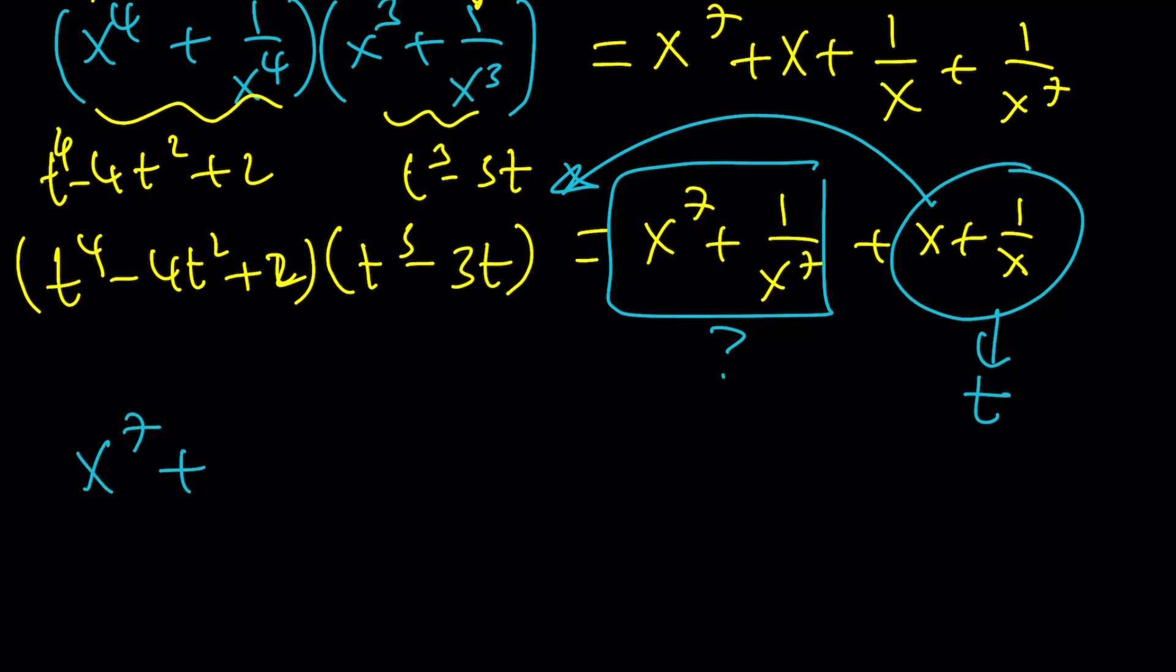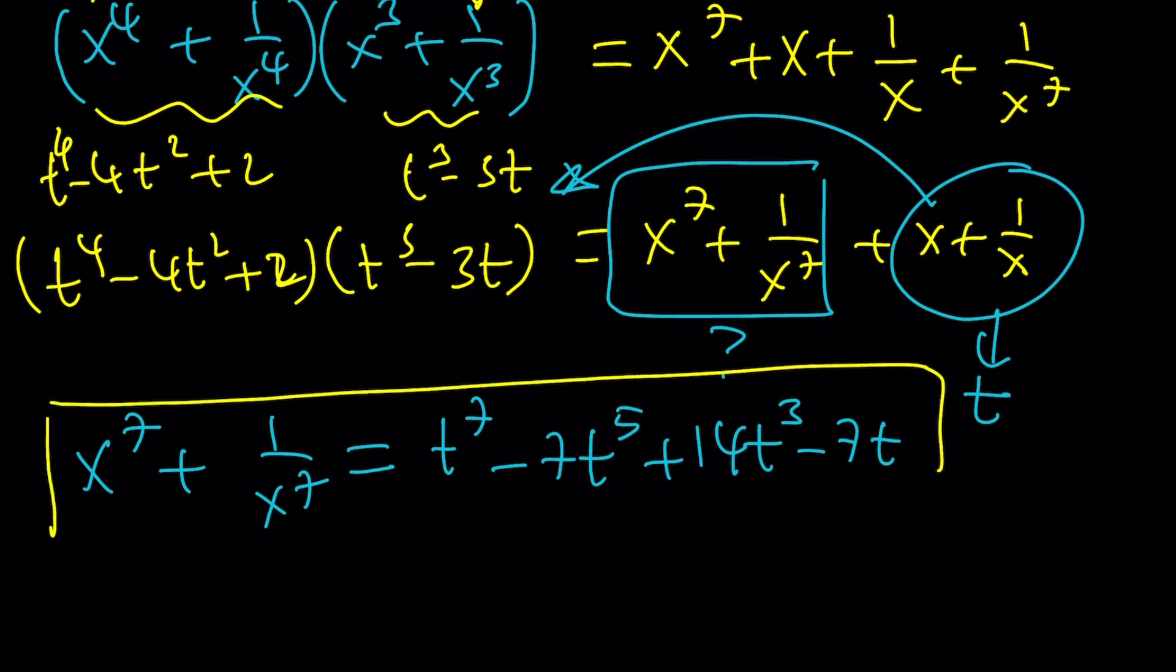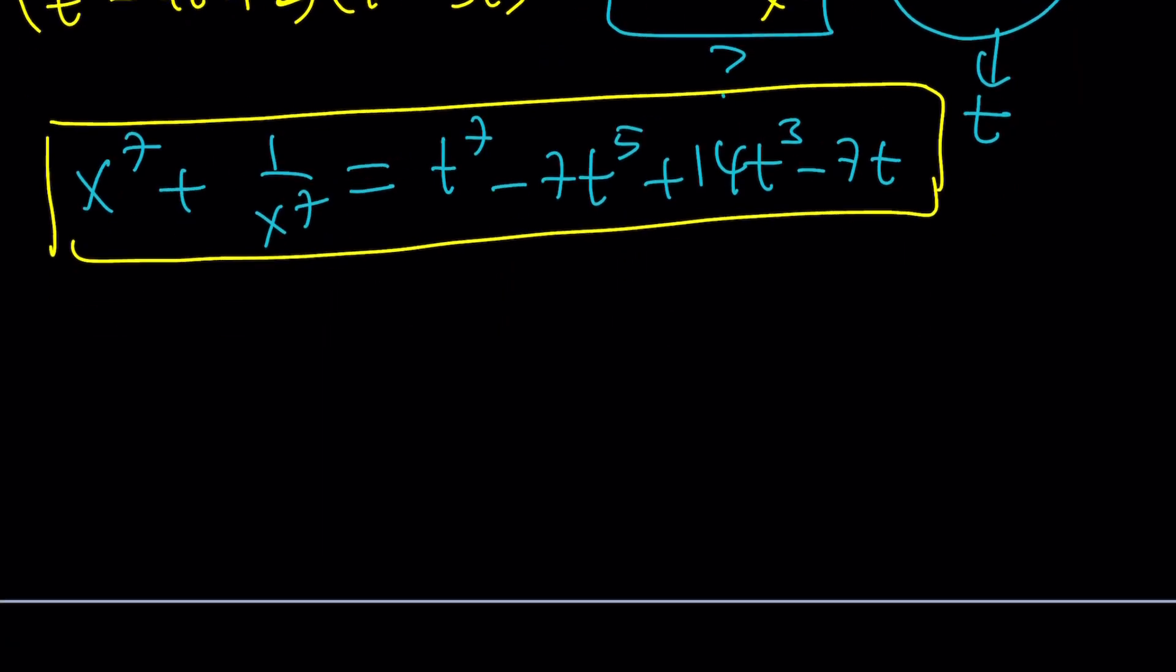After doing all the work, we're going to end up with this. x to the seventh plus 1 over x to the seventh equals, in terms of t, t to the seventh minus 7t to the fifth plus 14t to the third minus 7t. Notice that everything is a multiple of 7 except for the leading coefficient. That's basically what the answer is. That's what we've been looking for. Great. Let's see if we can use the second method.